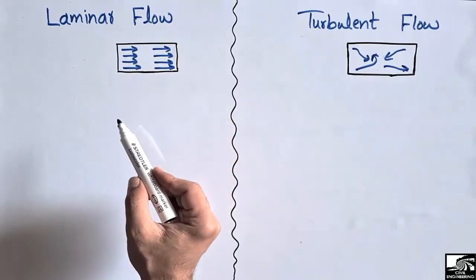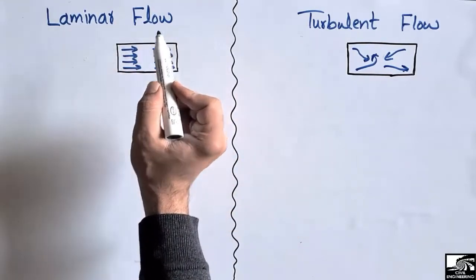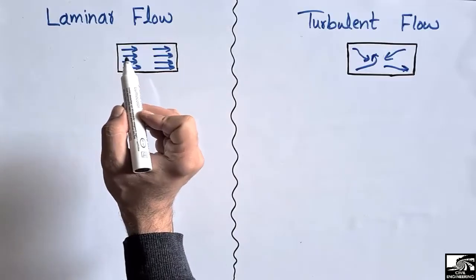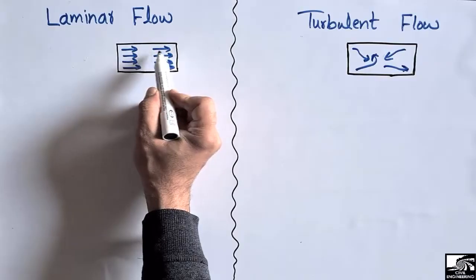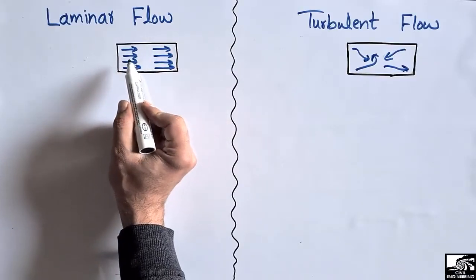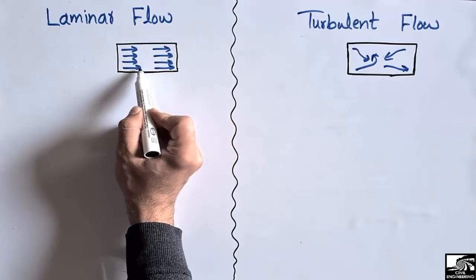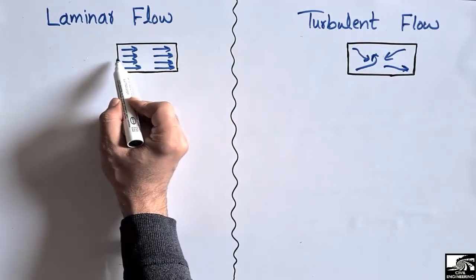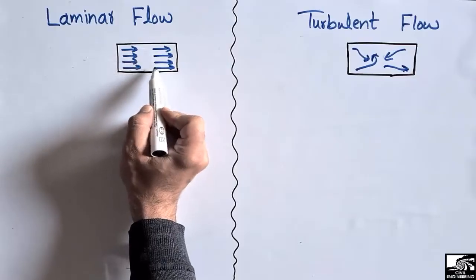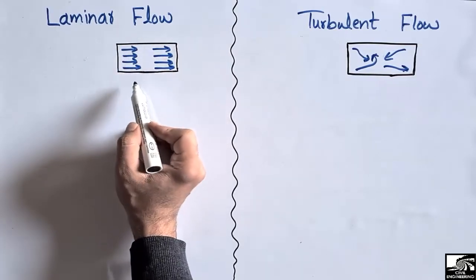The laminar flow is the type of flow in which the particles of the fluid move parallel to each other and move alongside one another. If we look at the particles of the fluid — let's suppose this is any fluid and these arrows show the direction of the particle — we can see that they move parallel to each other and in the same direction, so they are not disturbing one another.